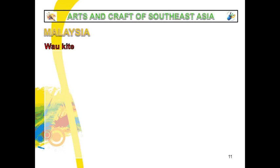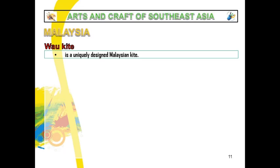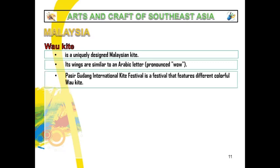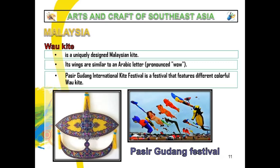In Malaysia, their kite — or saranggola in Filipino — is very famous and level up, which is why they call it the Wau kite. It is a uniquely designed Malaysian kite whose wings are similar to an Arabic letter pronounced Wau. The Pasir Gudang International Kite Festival features different colorful Wau kites.